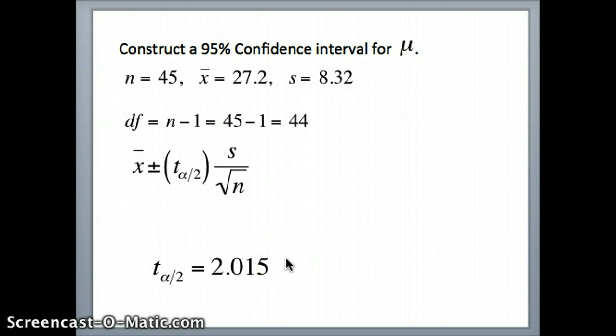So we have the 2.015 there for our t-alpha by 2. And now we have all the information we need. x-bar is 27.2. t-alpha by 2 is 2.015. s is 8.32. n is 45. So s divided by root 45. So let's go ahead and plug those numbers in and see what we get.